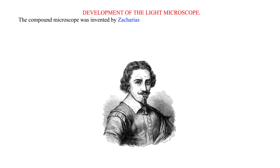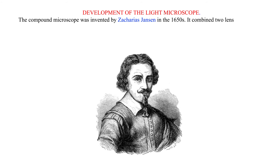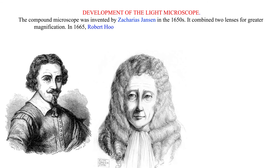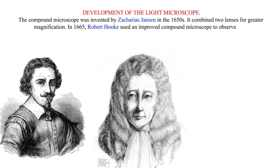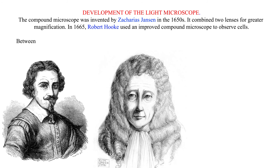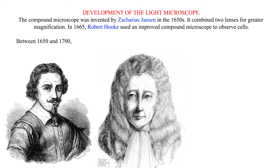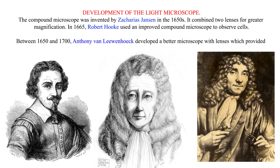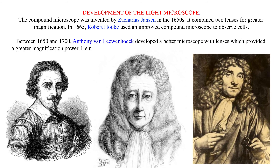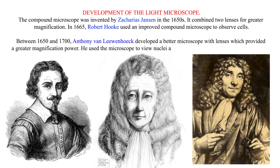Development of the light microscope: The compound microscope was invented by Zacharias Janssen in the 1650s; it combined two lenses for greater magnification. In 1665, Robert Hooke used an improved compound microscope to observe cells. Between 1650 and 1700, Anthony van Leeuwenhoek developed a better microscope with lenses which provided greater magnification power; he used the microscope to view nuclei and unicellular organisms including bacteria.